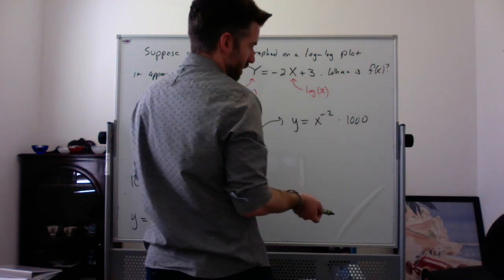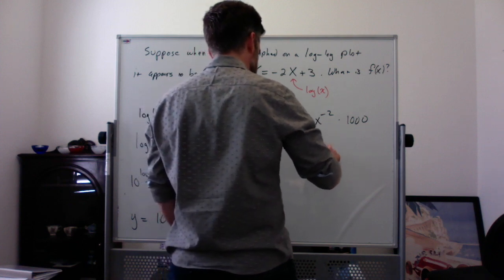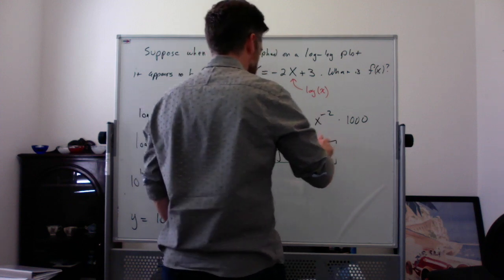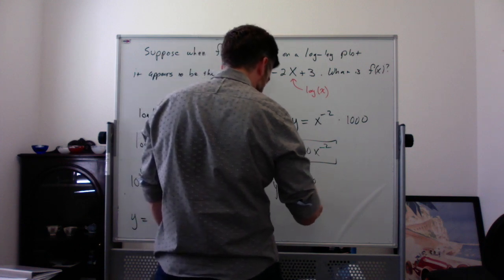If you want to, you can either leave it as is and write it as y = 1000x^-2, or if you prefer you can write it as y = 1000/x^2.